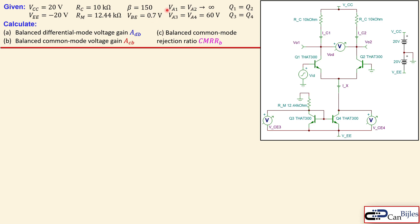Q1 and Q2 are matched with infinite Early voltage, so VA1 and VA2 are infinite. For Q3 and Q4 the Early voltage is 60 volts. We will see what this means for our calculations in detail shortly.